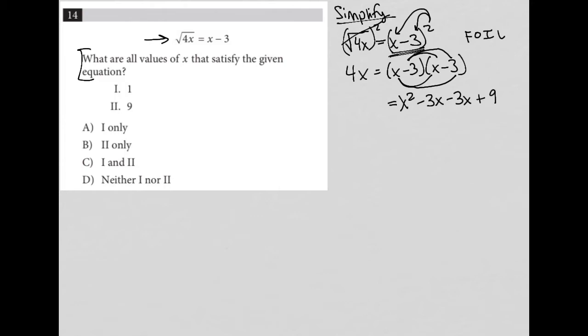I still have 4x here. Then I can combine those middle terms. So I'd have 4x equals x squared minus 6x plus 9. Continuing to combine like terms, I'm left with 0 equals x squared minus 10x plus 9.